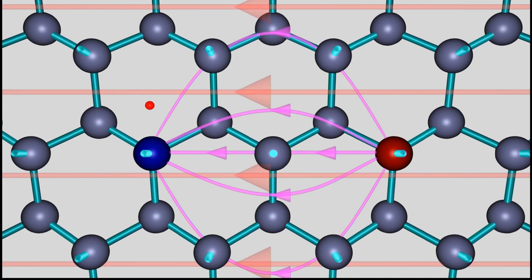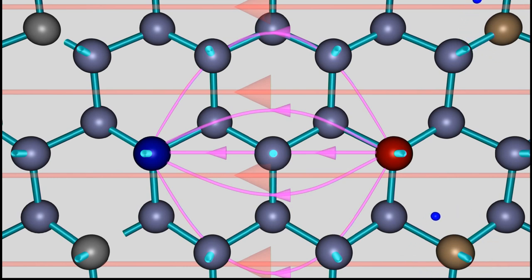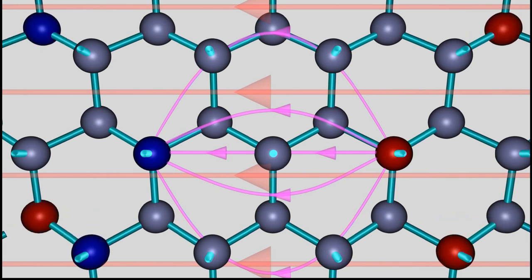Let's put additional impurity atoms to the crystal lattice and observe what happens inside of the electric field. Electrons are removed from the P-type region by the voltage source, hence positively charged ions are left behind. At the left side, electrons are injected and those additional electrons recombine with the holes of the P-type region.